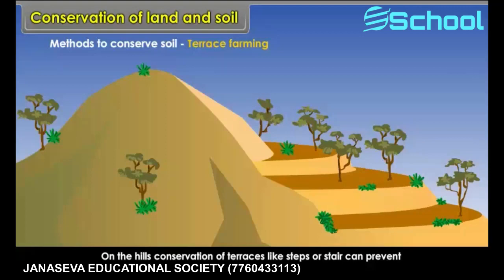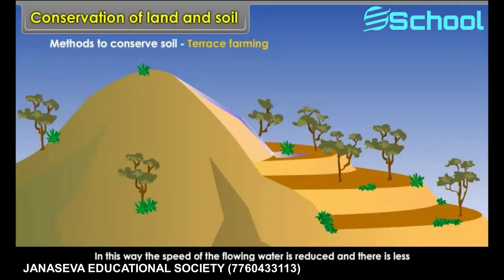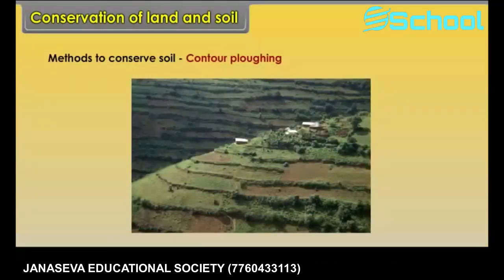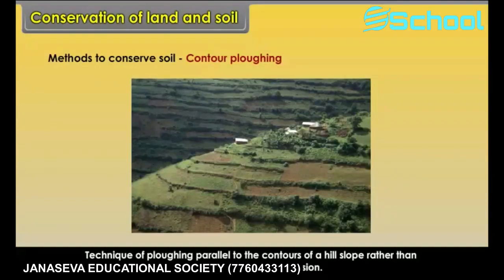In terrace farming, the speed of the flowing water is reduced and there is less soil erosion. Contour ploughing is the technique of ploughing parallel to the contours of a hill slope rather than up and down the slope, so as to reduce soil erosion.